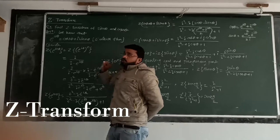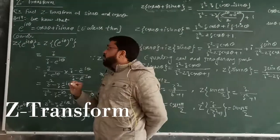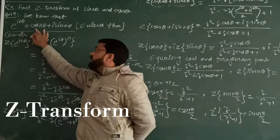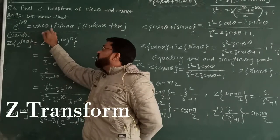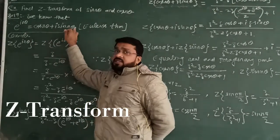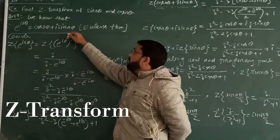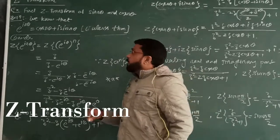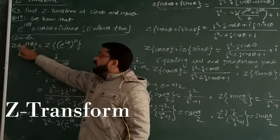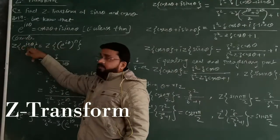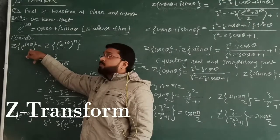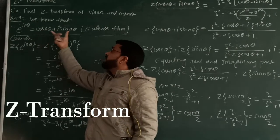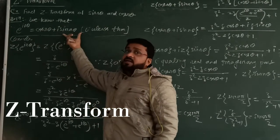This is a relation you have to remember: e raised to the power i·n·θ can be written as cos(nθ) plus i·sin(nθ). This is by Euler's theorem. Now, we will find out the Z-transformation of e raised to the power i·n·θ, and automatically we get the Z-transformation of cos(nθ) and sin(nθ) simultaneously.